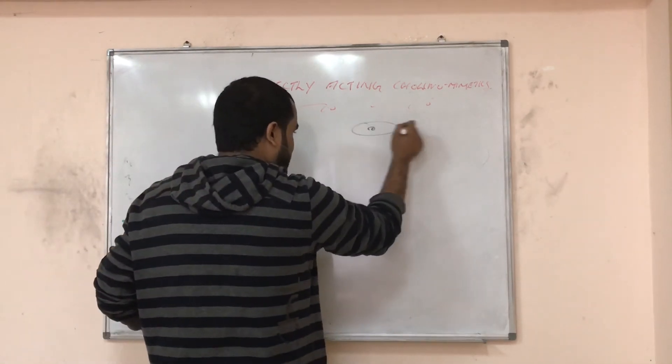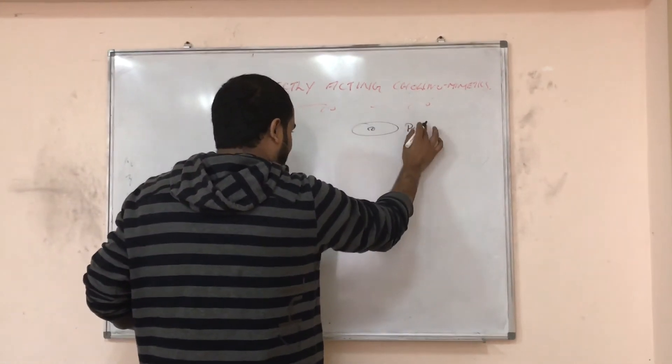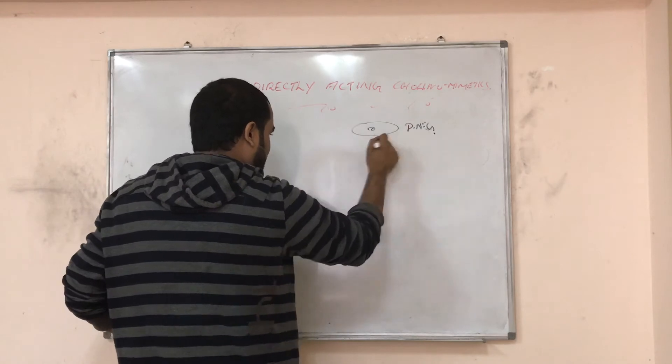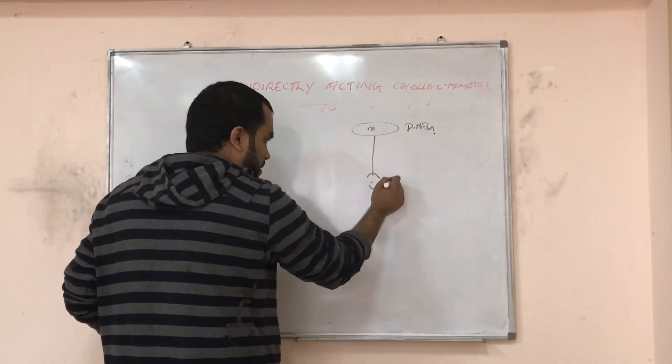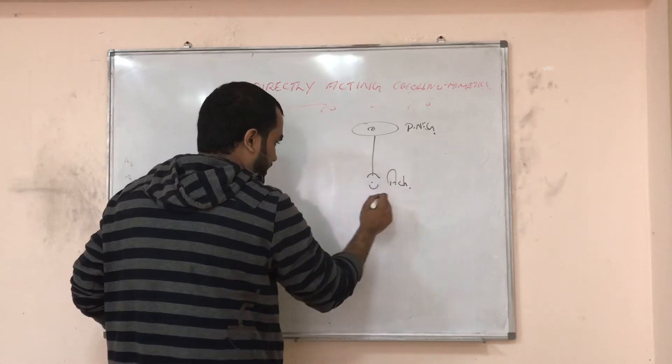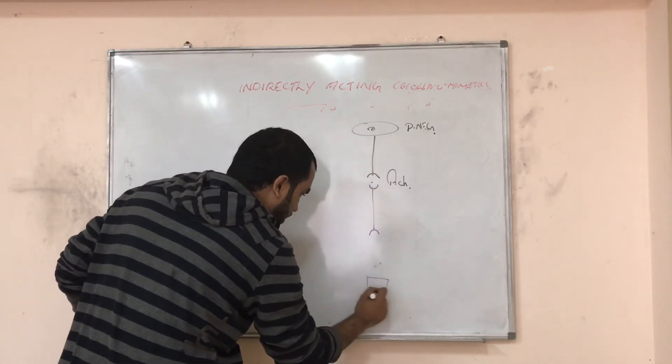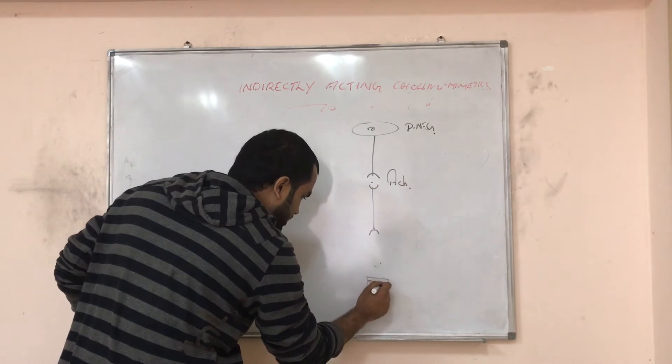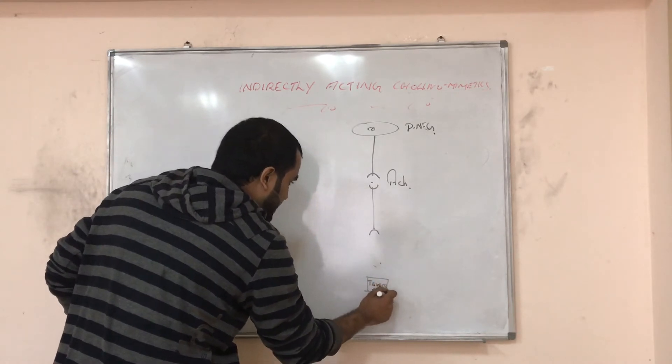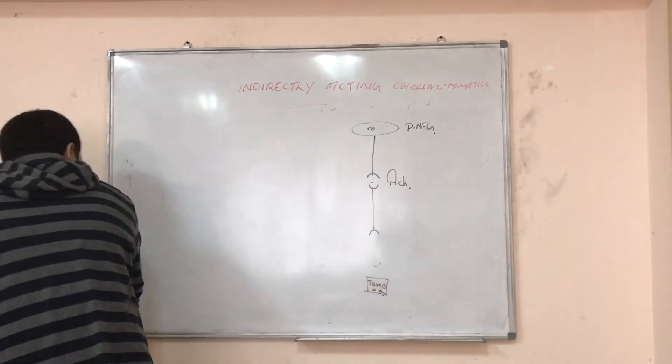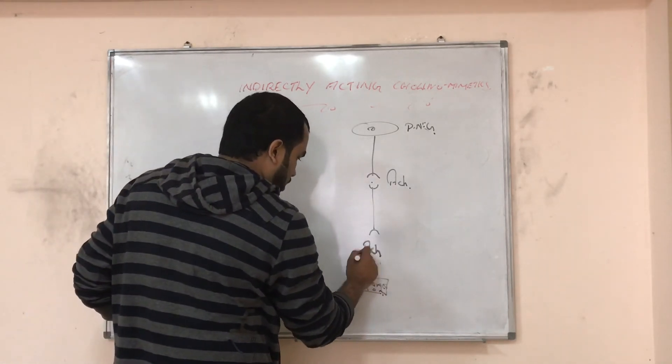This is your parasympathetic ganglia. So we have the presynaptic membrane. Here presynaptic membrane, we have acetylcholine. Then we have the postsynaptic membrane. And here is your target organ. From the postsynaptic membrane, what will be released? Acetylcholine will be released out.